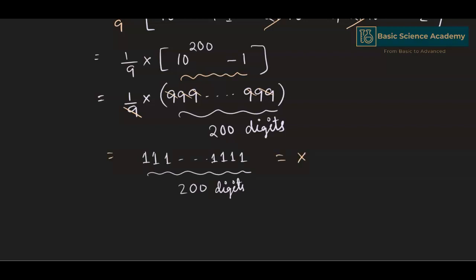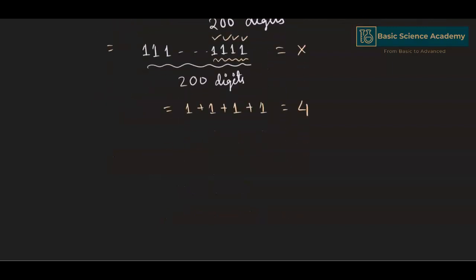Hence, the last four digits of x are 1, 1, 1, and 1. Hence, the sum of the last four digits equals 1 + 1 + 1 + 1 = 4. Hence the answer is 4. We get the same answer 4 from both methods.